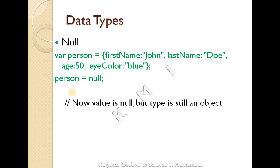This is a JavaScript introduction — advantage, limitations, case sensitive, flexible. Data types: String, Numbers, Boolean, Null, Undefined, Objects. These are the data types of JavaScript. Thank you.